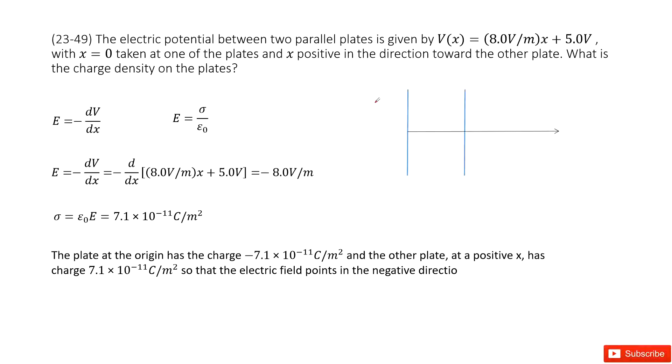You can see there we have two parallel plates. The potential function is given with a variable x. It tells us x equals 0 is at one of the plates, look like this one. The question asks what is the charge density on the plates.